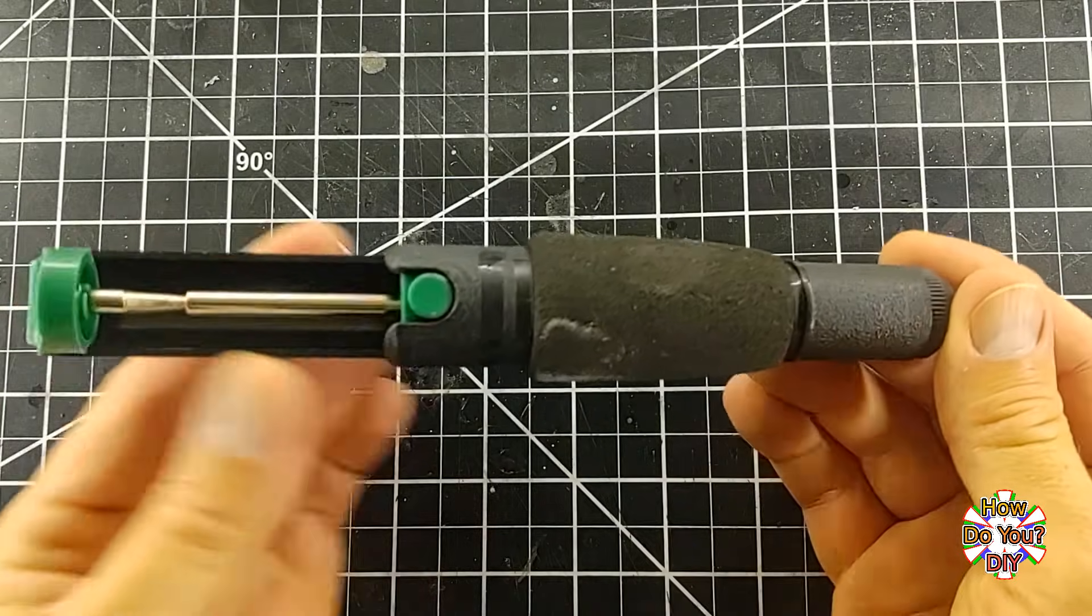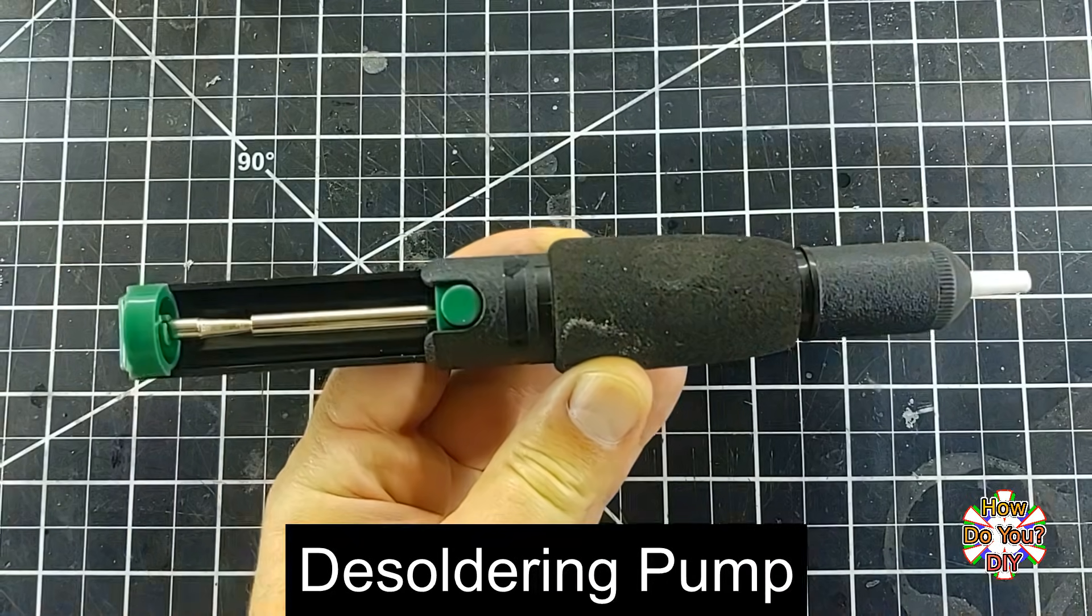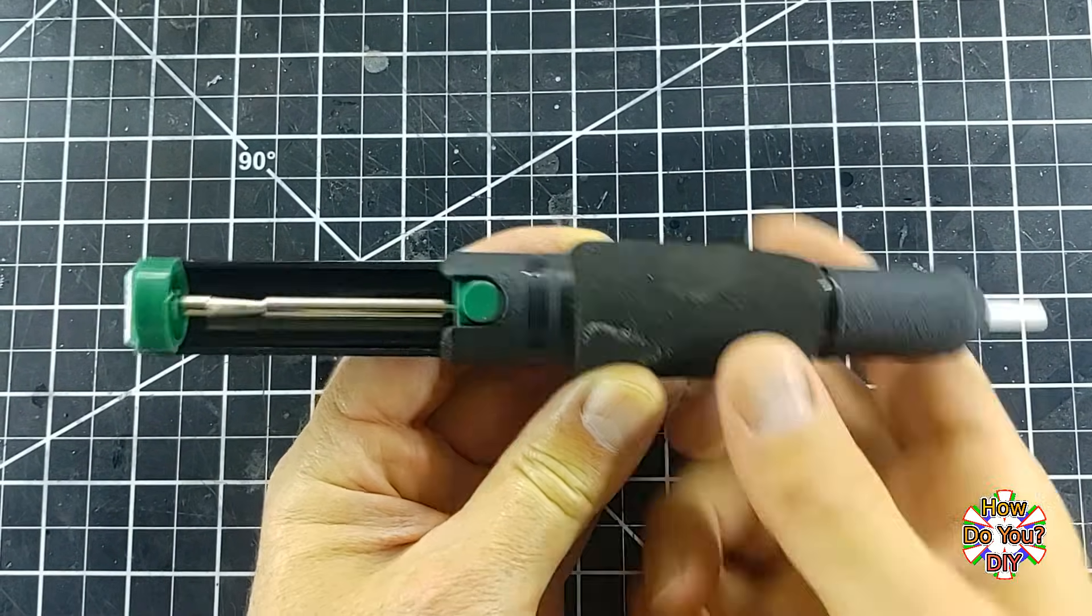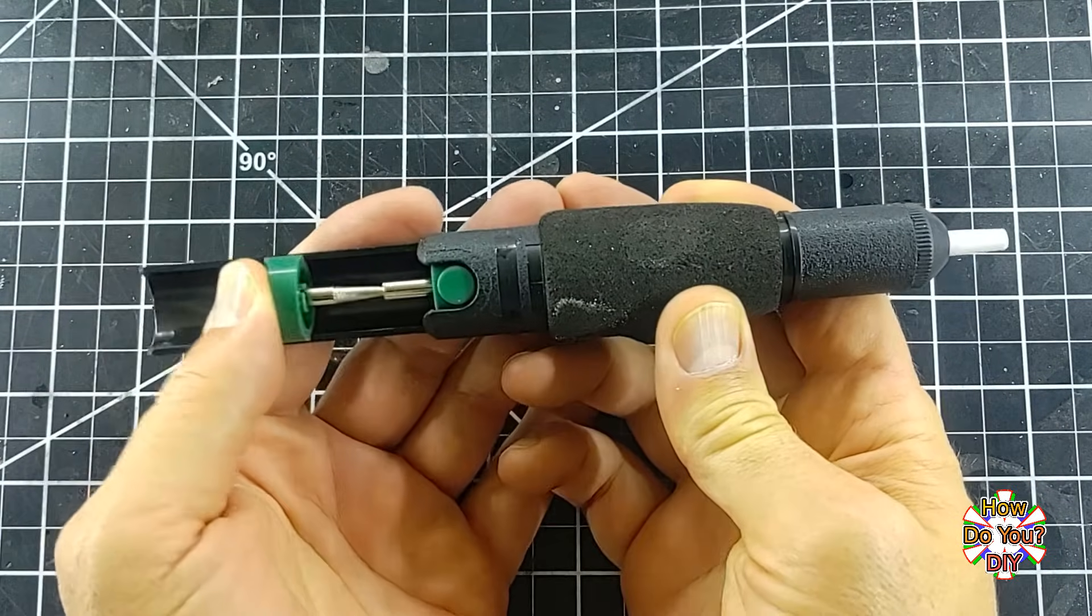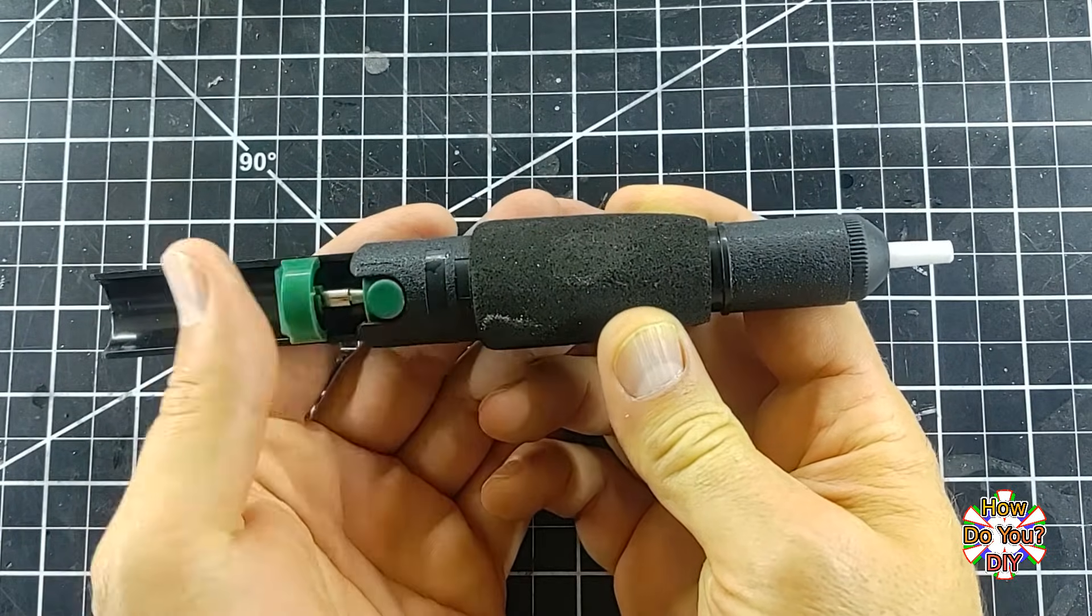Now for the next method of removing solder, I'll use a solder sucker. It has a plunger that you push down, then when you're ready for it to suck up the solder, you press the button.